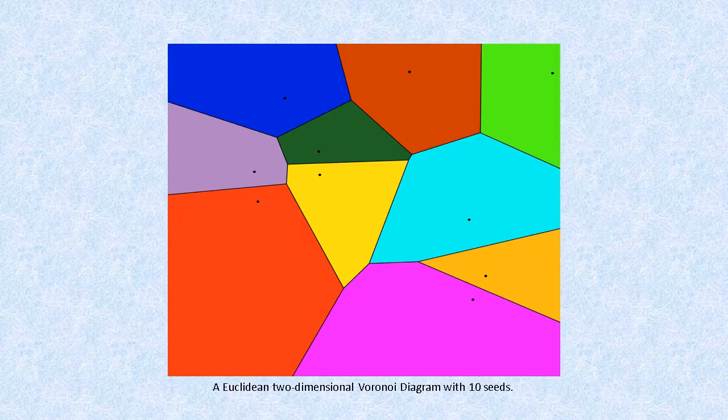Voronoi diagrams are easiest to understand when presented visually. The diagram here has 10 seeds, which are represented by black dots, and 10 Voronoi regions, which are represented by colored areas. Each Voronoi region contains all the space that is closer to its single enclosed seed than to any other seed.